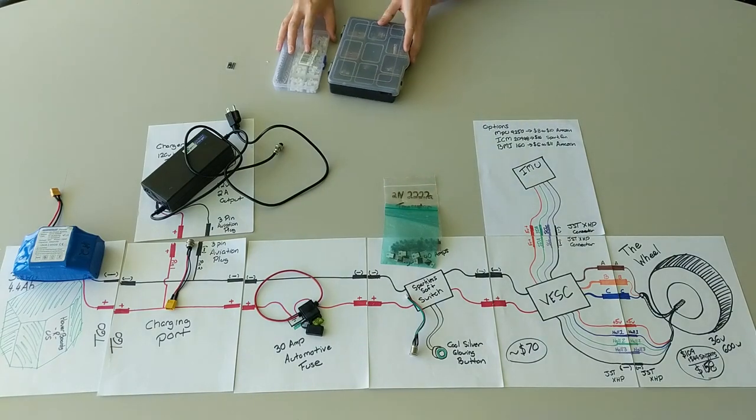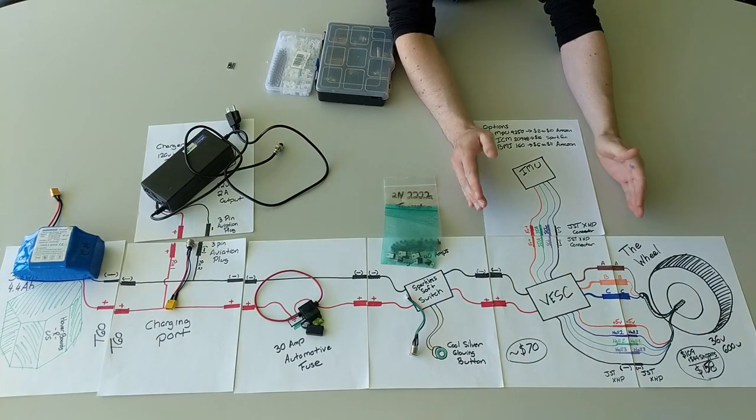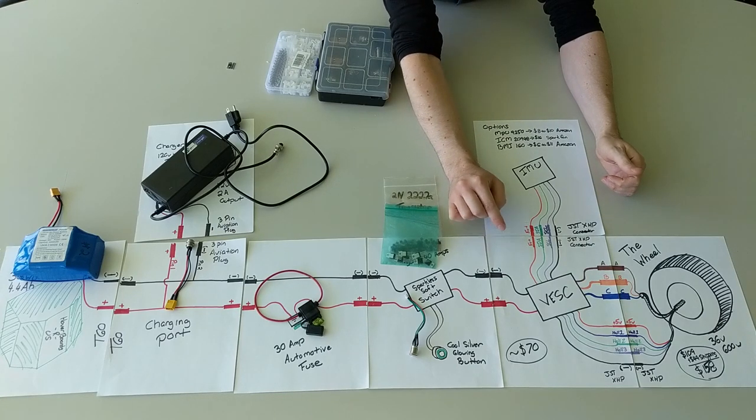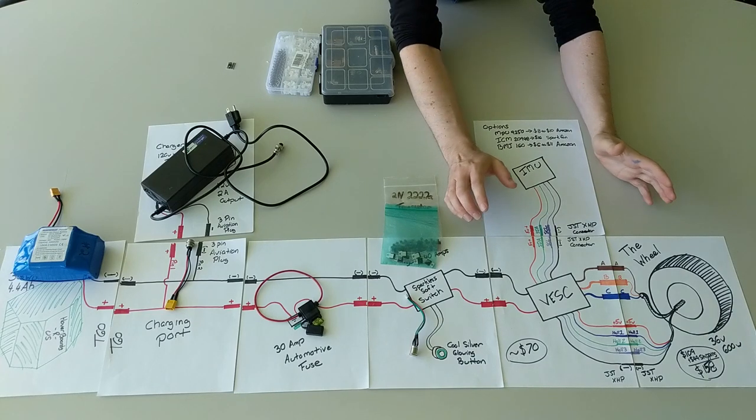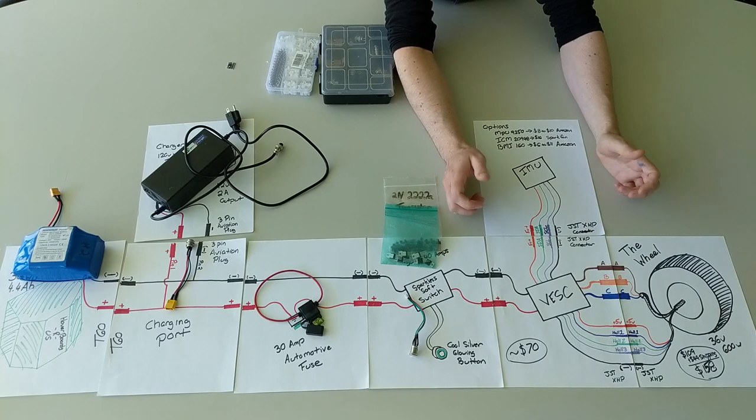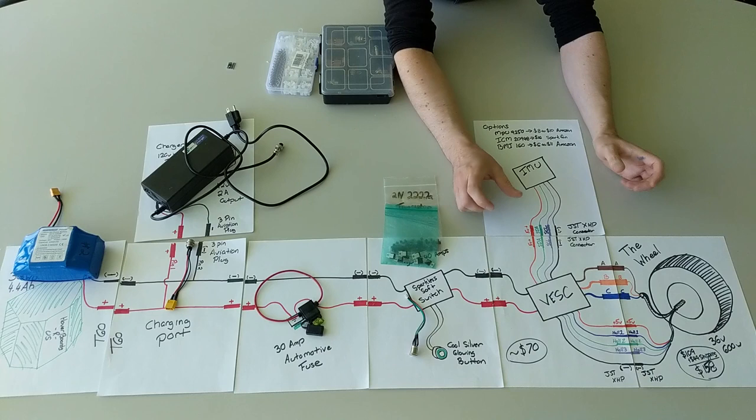Now after the switch we're going to get into the meat of the circuit. This is expressed in two primary components, a VESC and an IMU. A VESC is something that I'm just learning about now, but it's essentially an open source project to make a smart electronic speed controller. There's a few different manufacturers that make them. They range in price based on quality.